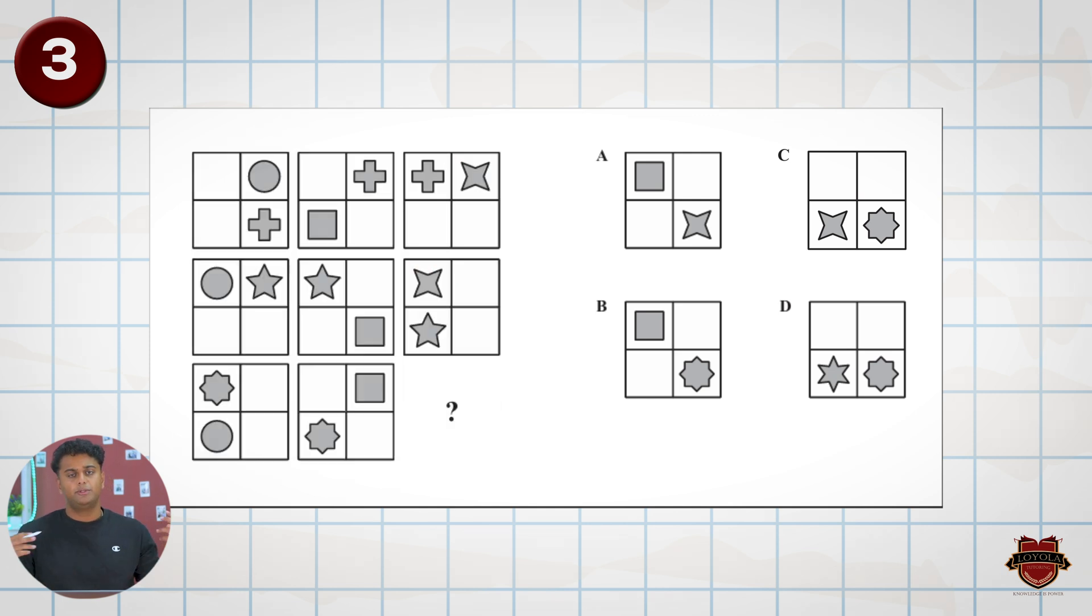All right, so how do we do a question like this? You do this question the same way you eat an elephant, right? Have you guys heard of that expression? You eat an elephant by taking one bite at a time. Or Rome wasn't built in a day, it was built brick by brick, or a journey of a thousand steps starts with just one.